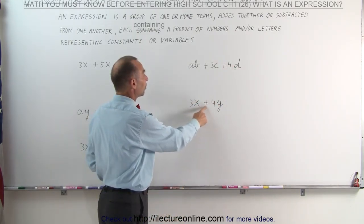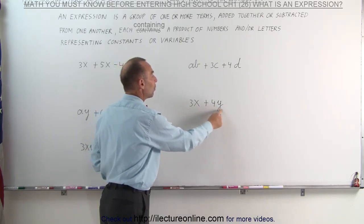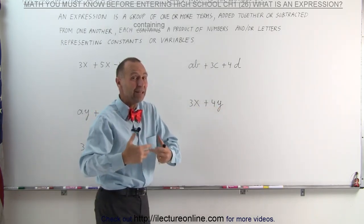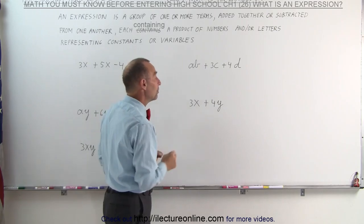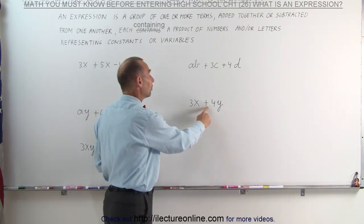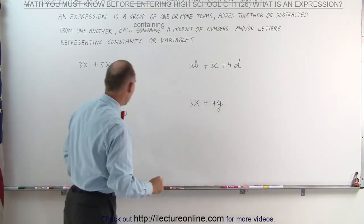Here we have 3 times x, plus 4 times y. x and y represent variables, can be any value, and they're not going to be the same. So 3 times an unknown value, plus 4 times another unknown value.